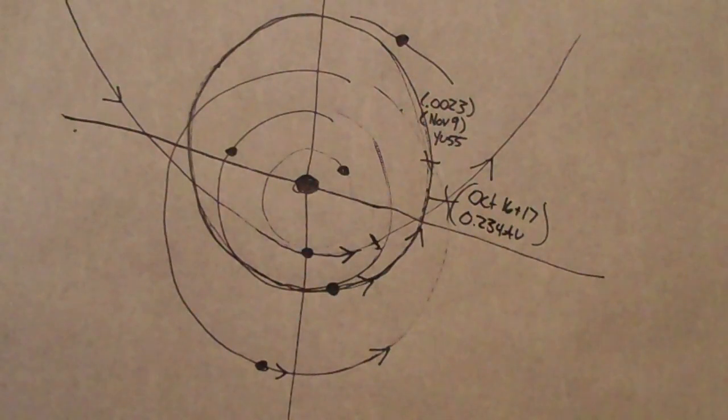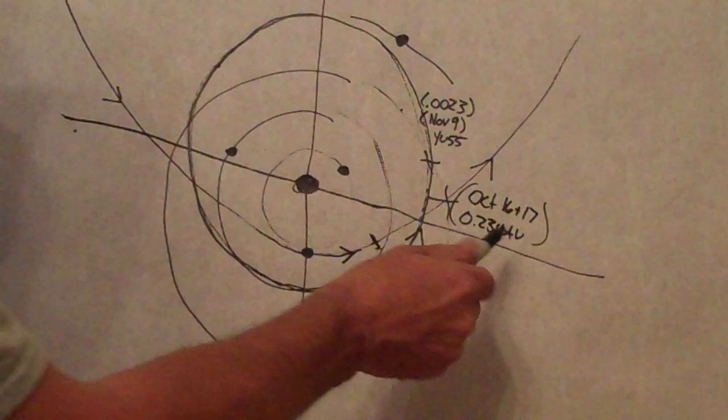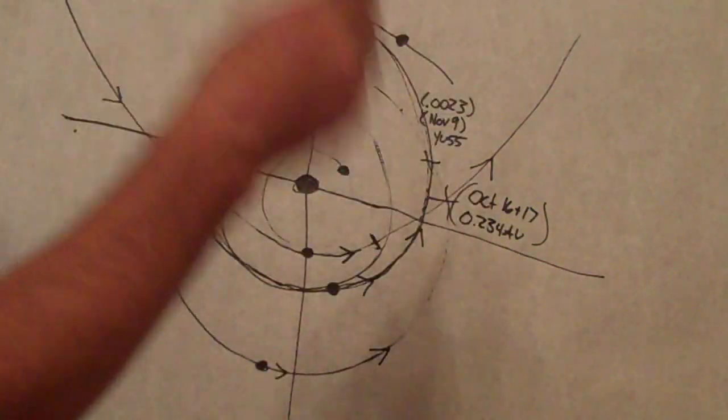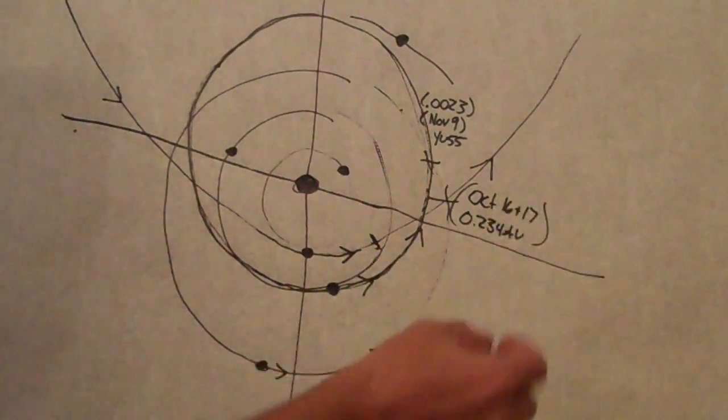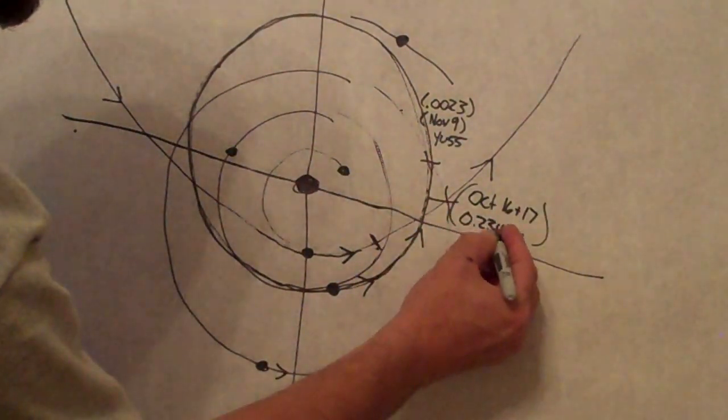Now of course we all know the Comet Elenin is going to stop. So I'm going to have to look at maybe on the 16th it started at, I don't even know, 0.23. You know, the difference between 0.2, I don't know.